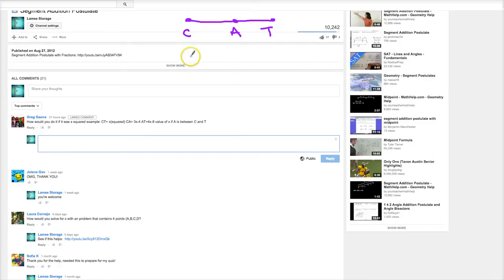Now I need to write the segment equation. CT is equal to CA plus AT. In the example, x squared is given, CA is 3x minus 4, and AT is 4x minus 8.